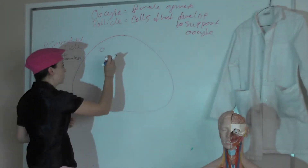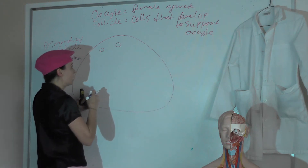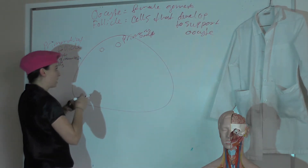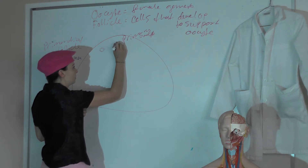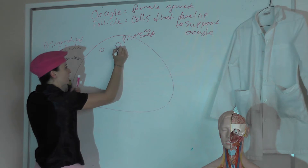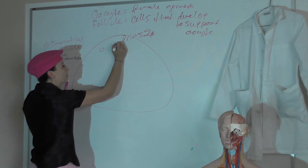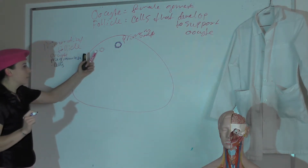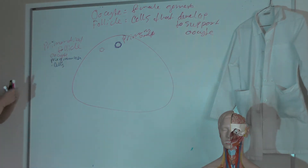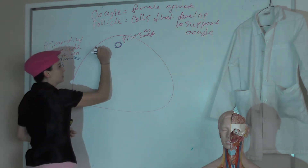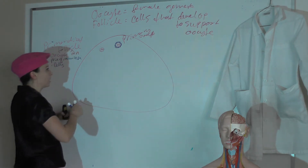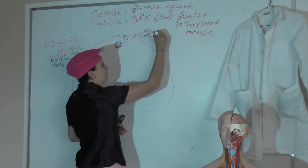We also have primary follicles. In a primary follicle, we have our oocyte and still just one little layer of pre-granulosa cells, but they're starting to respond to FSH so they're a little bigger than in a primordial follicle. Primordial follicles actually develop in utero, so a female is born with all of the oocytes she'll ever have. They're arrested in development at this primordial follicle stage — the oocyte is still diploid and hasn't completed meiosis. These primary oocytes are still 2N.